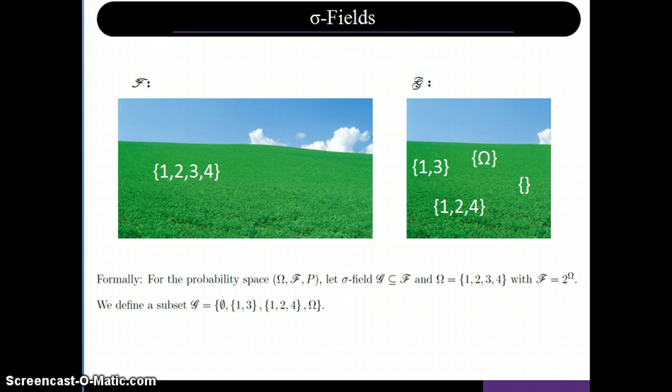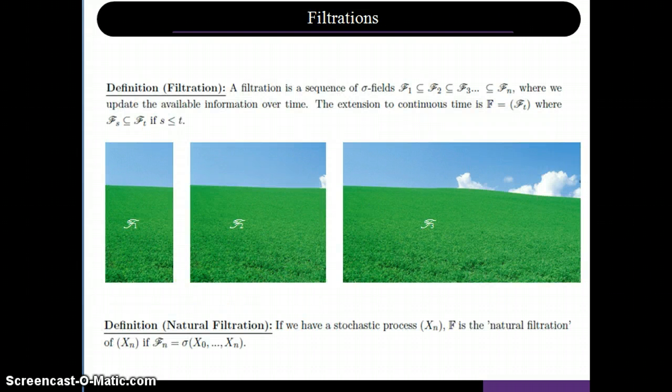Well, in this case we make a sigma field G that tracks odd and evens. Now, filtrations. Filtration can simply be described as a sequence of sigma fields, where we have information that gets updated over time,